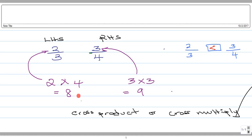The best way to do this is to find the cross product or to cross multiply. So we're going to take the left hand numerator and we're going to multiply that with the right hand denominator.